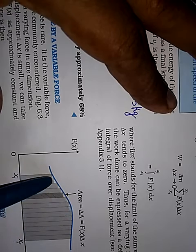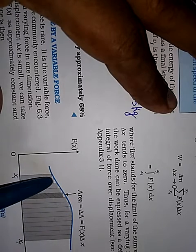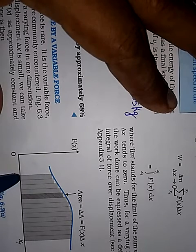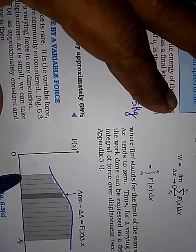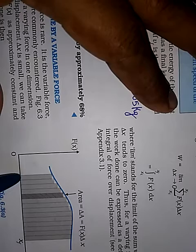So if you want to have an accurate value, or if you want to move towards more accurate value, then what you have to do is, this del x, that value has to tend to 0. You must take del x which is very, very close to 0.